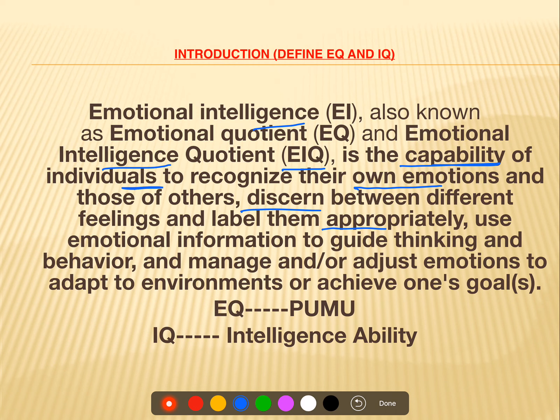You are guiding your behavior according to emotions. If you have to adapt to a job environment you have to manage your emotions accordingly and adjust, because you want to achieve your goal. How you manage your emotions to achieve a goal — that is what emotional quotient is. If you are able to alter your emotions and adapt yourself, it is said that you have a high EQ.